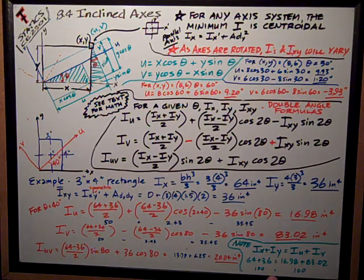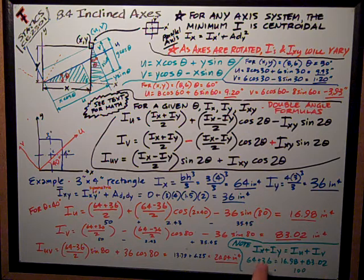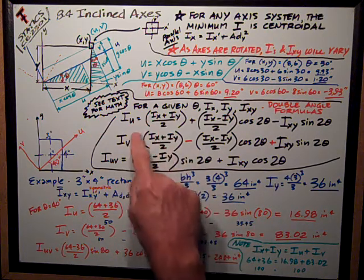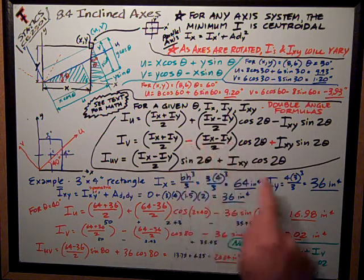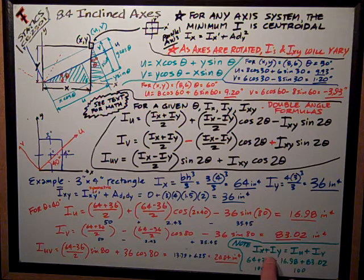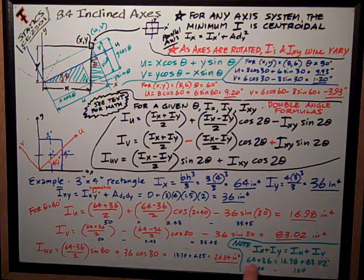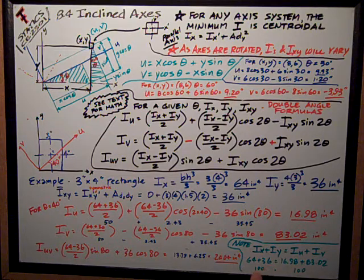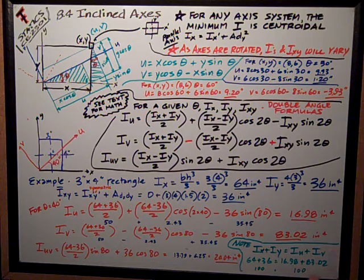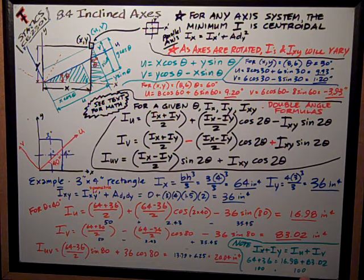And the final thing I want to look at is, this is a very interesting concept that if you add these two formulas together, IU and IV, you get IX plus IY. And that's what I'm showing right here. IX plus IY is equal to IU plus IV. 64 plus 36 is 100. 16.98 plus 83.02 is 100. So that works out.